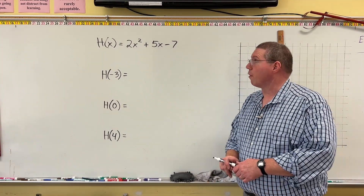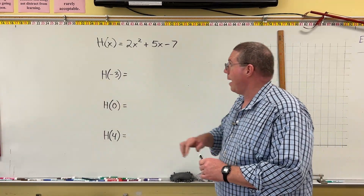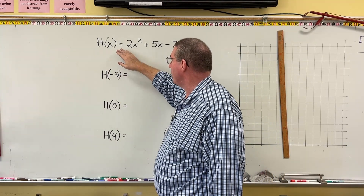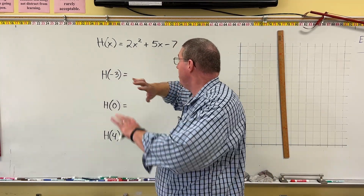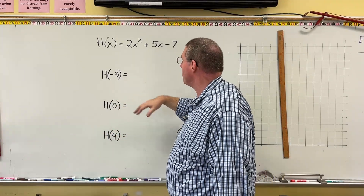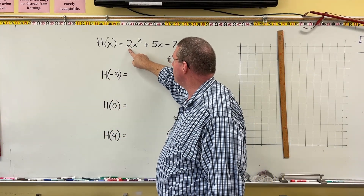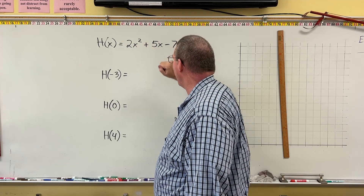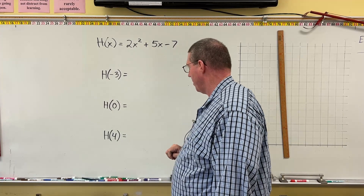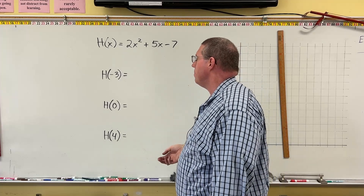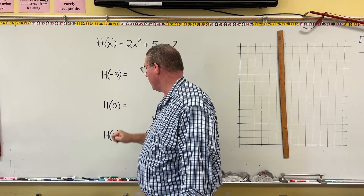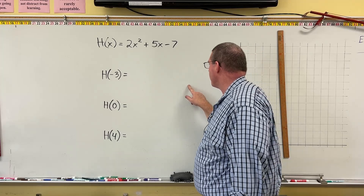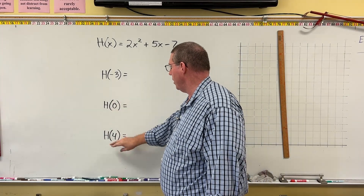Let's try more examples. Suppose our function is H(x), defined as 2x² + 5x − 7. The input is X, and the output is given by that expression. We are given three inputs — negative 3, 0, and 4 — and we want to find the outputs that correspond to each of these inputs.